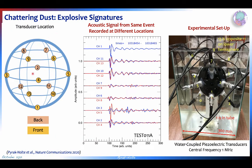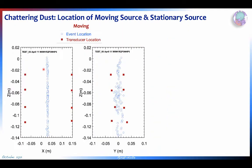To characterize the chattering dust we used a death star configuration where we dropped chattering dust down the center, letting it fall under gravity, and then looked at pairs of ultrasound transducers. It is an explosive source that produces a compression wave and is relatively isotropic, giving uniform signals in all directions.